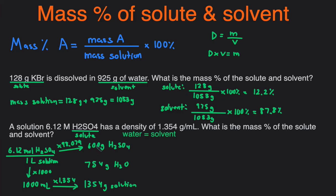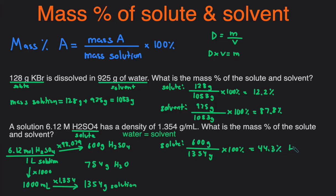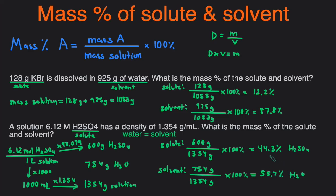Just to recap: the mass of the solution equals the mass of solute plus solvent. We had the mass of the solution and the mass of the solute, so subtracting gives us the mass of the solvent. Now plugging into the equation: the mass percent of the solute is 600 grams divided by 1354 grams times 100%, which gives approximately 44.3% for H₂SO₄. For the solvent, it's 754 grams of water divided by 1354 grams times 100%, which gives 55.7% for H₂O.